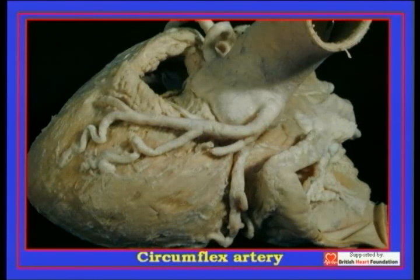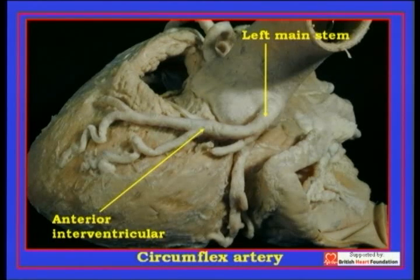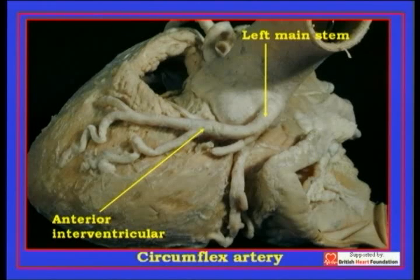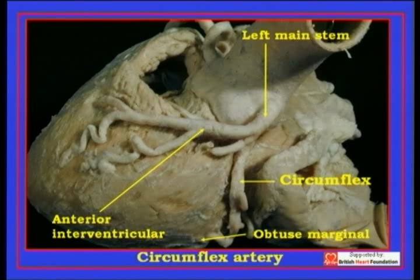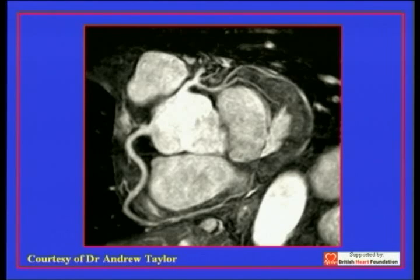The circumflex artery is another branch of the main stem of the left coronary artery. We've already looked at the anterior interventricular artery and its diagonal and septal perforating branches. Here we concentrate on the circumflex artery, which, when the left main stem branches, enters the left atrioventricular groove between the left atrial appendage and the obtuse marginal branch of the left ventricle. Here is one of the arteries from the circumflex running towards the ventricular mass and irrigating the obtuse marginal territory.